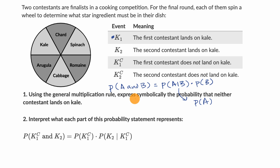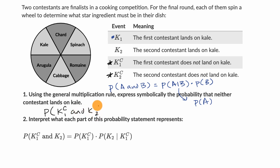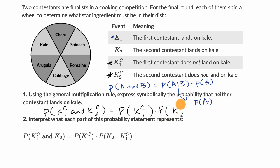So let me express what they're actually asking: the probability that neither contestant lands on kale. That means the first contestant does not land on kale, and the second contestant does not land on kale. So we write: P(K₁ᶜ and K₂ᶜ). These are independent events because whatever the first contestant lands on doesn't affect the second contestant's wheel. So we simply multiply: P(K₁ᶜ) times P(K₂ᶜ).